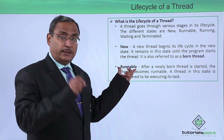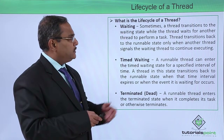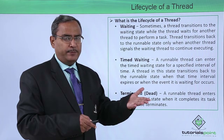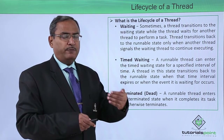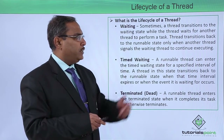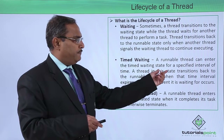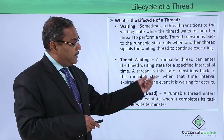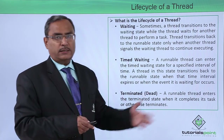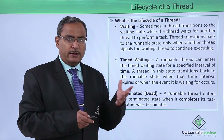In the runnable state, the thread is actually executing its own task. Sometimes a thread transitions to the waiting state while it waits for another thread to perform a certain task — a higher priority thread may come into the system causing this transition. A thread transitions back to the runnable state only when another thread signals the waiting thread to continue its execution. A runnable thread can also enter the timed waiting state for a specified interval of time, transitioning back to runnable when that time interval expires or when the event it is waiting for occurs.